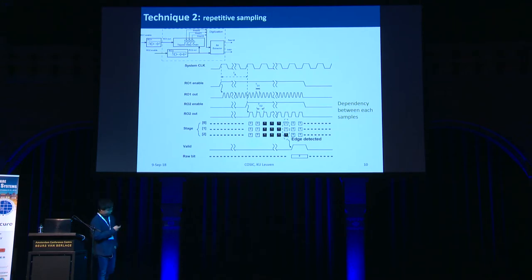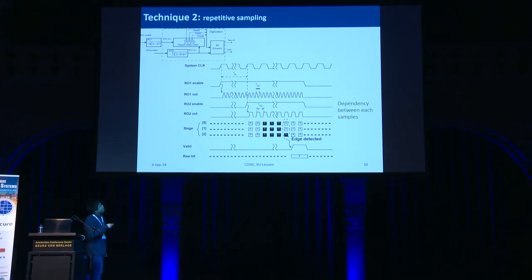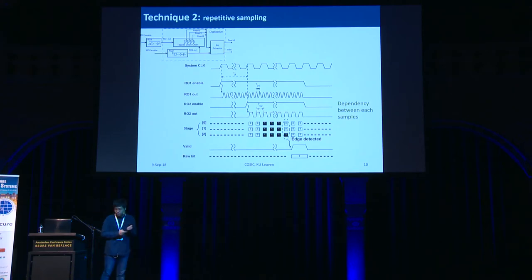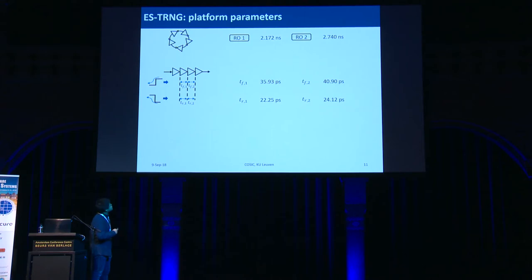The second technique is repetitive sampling. First, we enable free-running oscillator 1 for a period and let it accumulate jitter. Then we enable oscillator 2 to sample the signal. The sample might not capture the edge — it may be all zeros or all ones — so we keep sampling until the edge is captured. There is dependency between each sample, and this dependency is taken into account in the stochastic model. To build the stochastic model, we measure platform parameters: the average period of the free-running oscillators, the delays of the delay chain, the jitter strength, and the duty cycle.